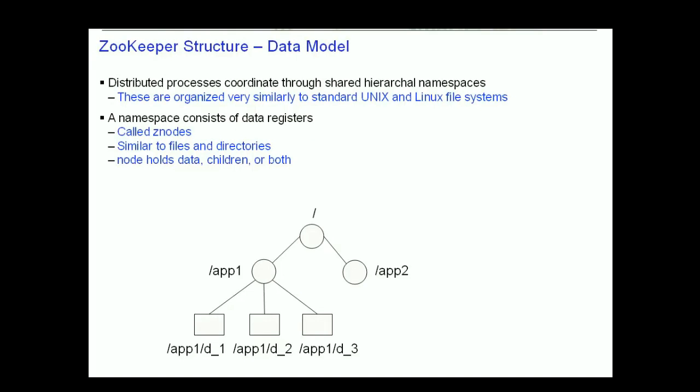The distributed processes using ZooKeeper coordinate with each other through shared hierarchical namespaces, organized much like file systems in Unix or Linux. Each namespace has a root node that can have one or more child nodes. Since the term 'node' has many connotations, ZooKeeper refers to each of these nodes as ZNodes. Data can be stored in a ZNode, and when data is written to or read from a ZNode, all of the data is either written or read. There is also an access control list, known as an ACL, associated with each ZNode, which allows control over who can create, read, update, and delete a ZNode.